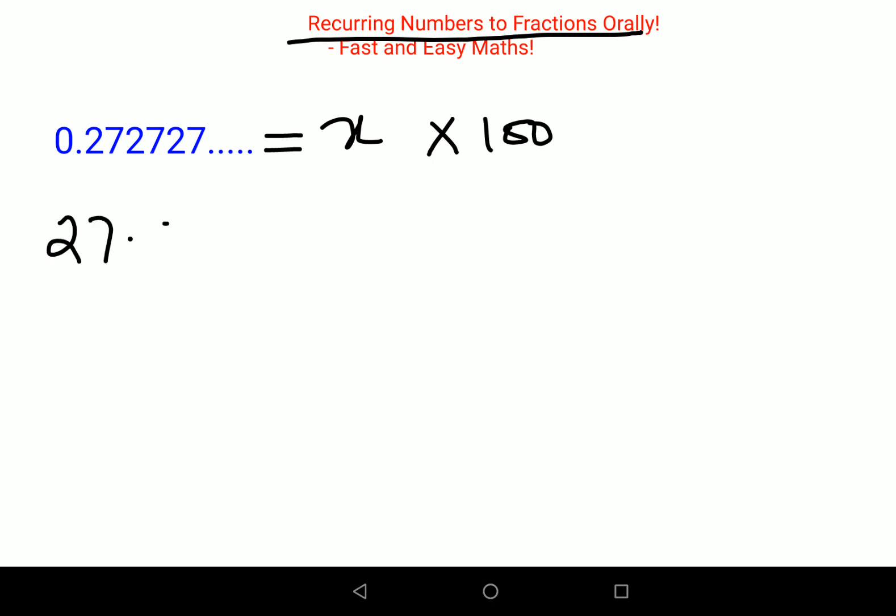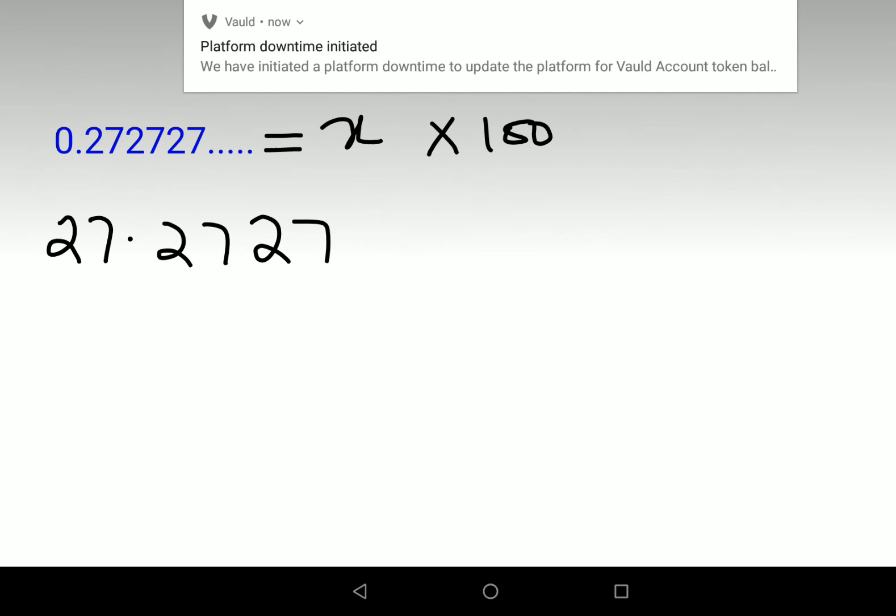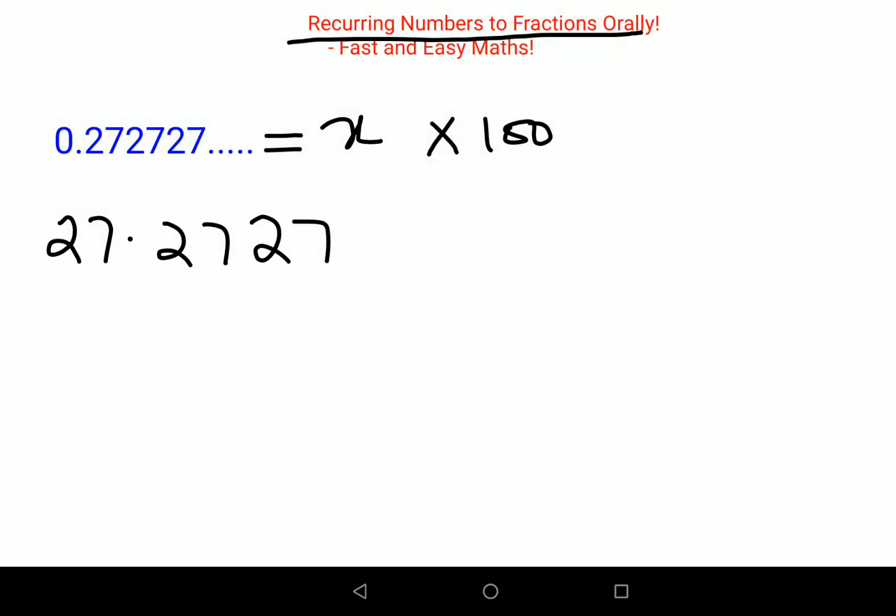So basically you will get 27.2727. Had you multiplied this by 10, you would have gotten 2.7272. That is not what we are looking for. You need to make sure that the numbers after your decimal point are exactly the same as your x.